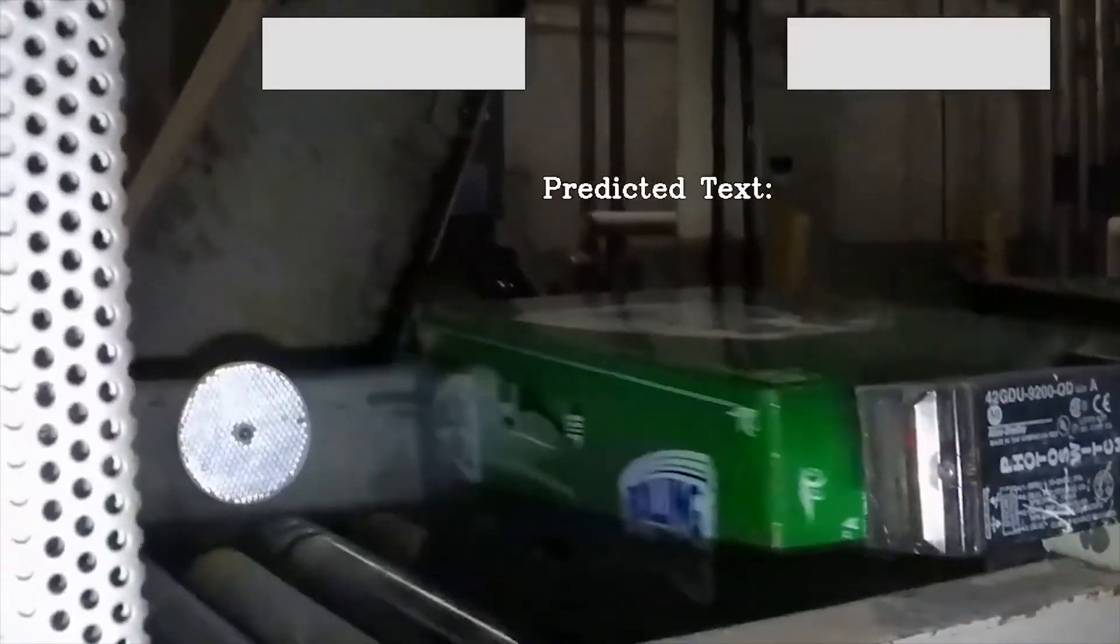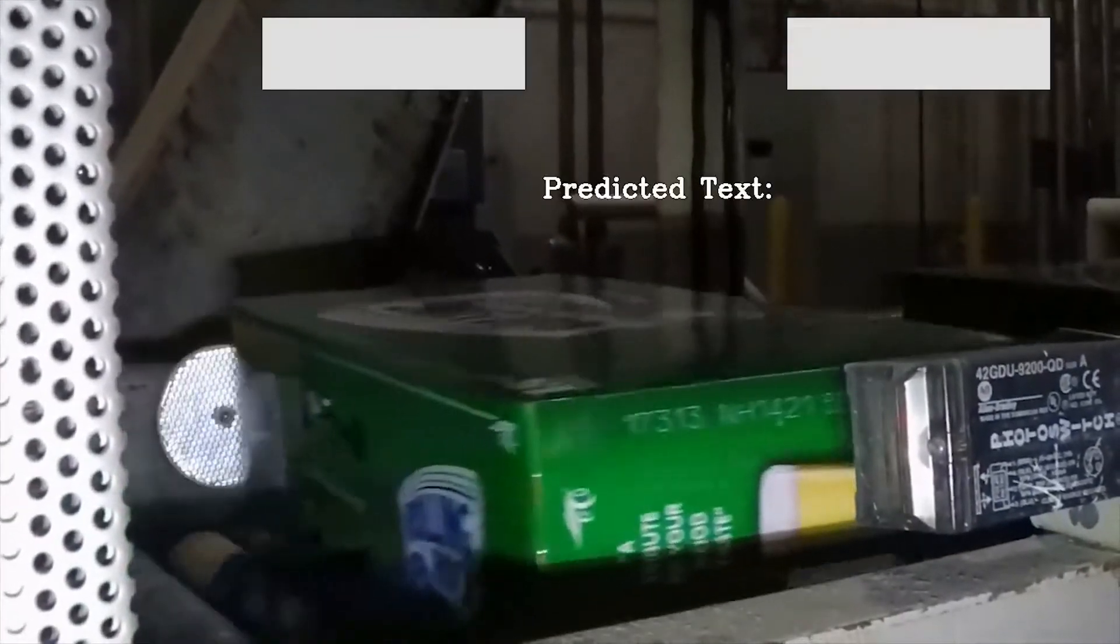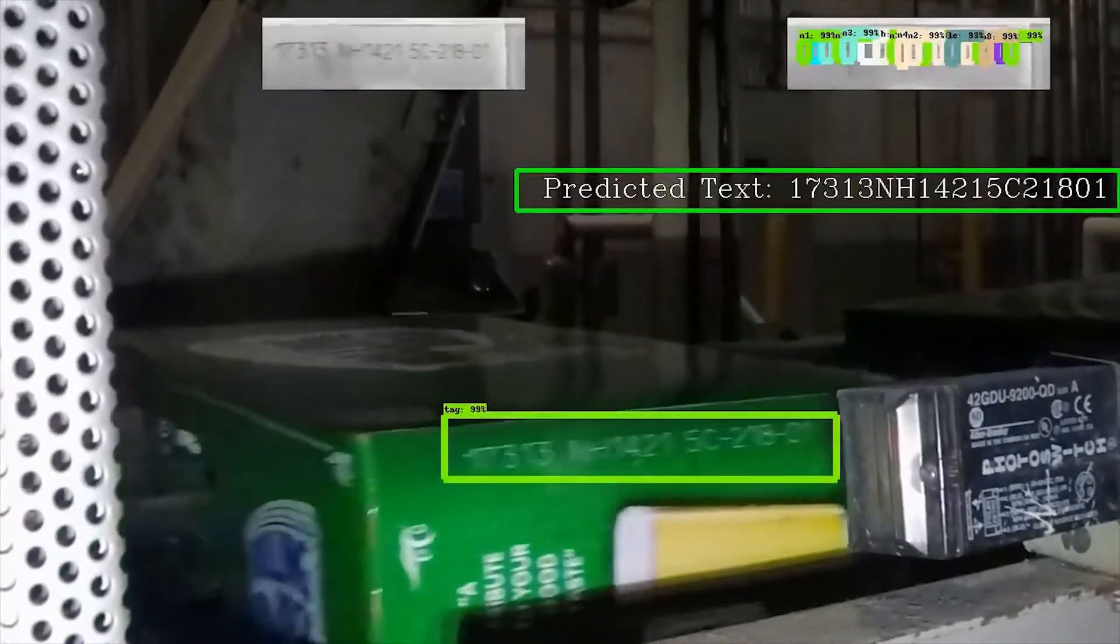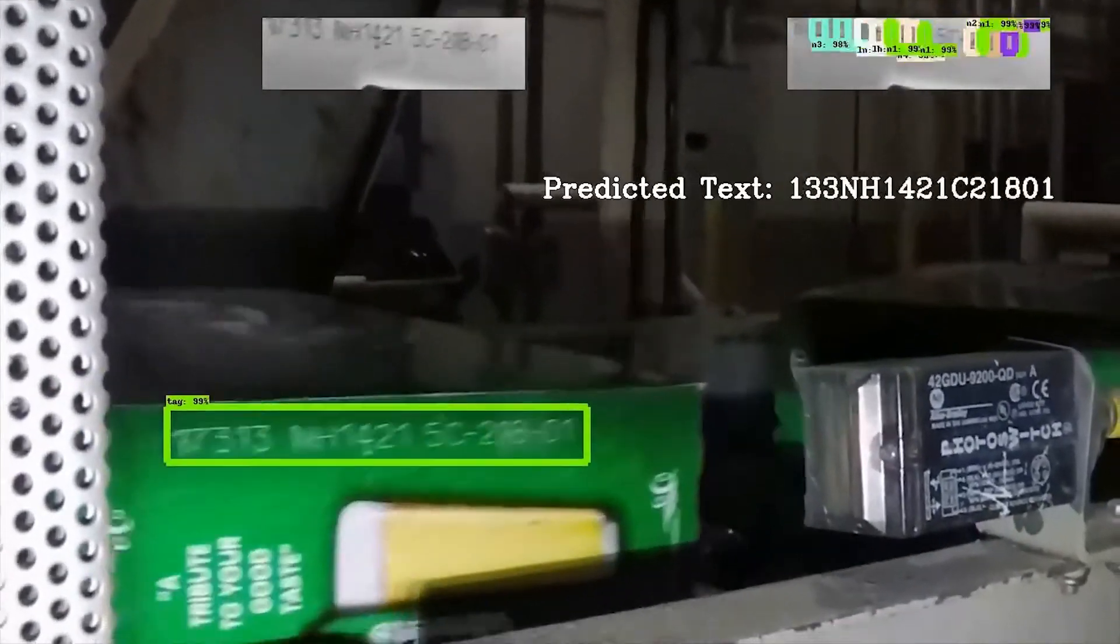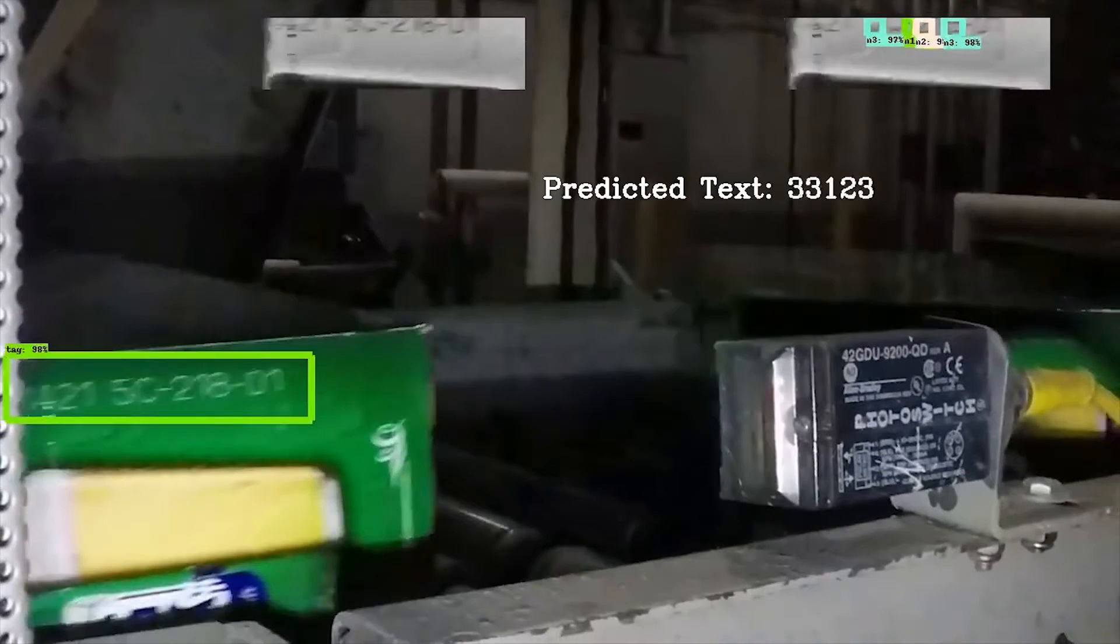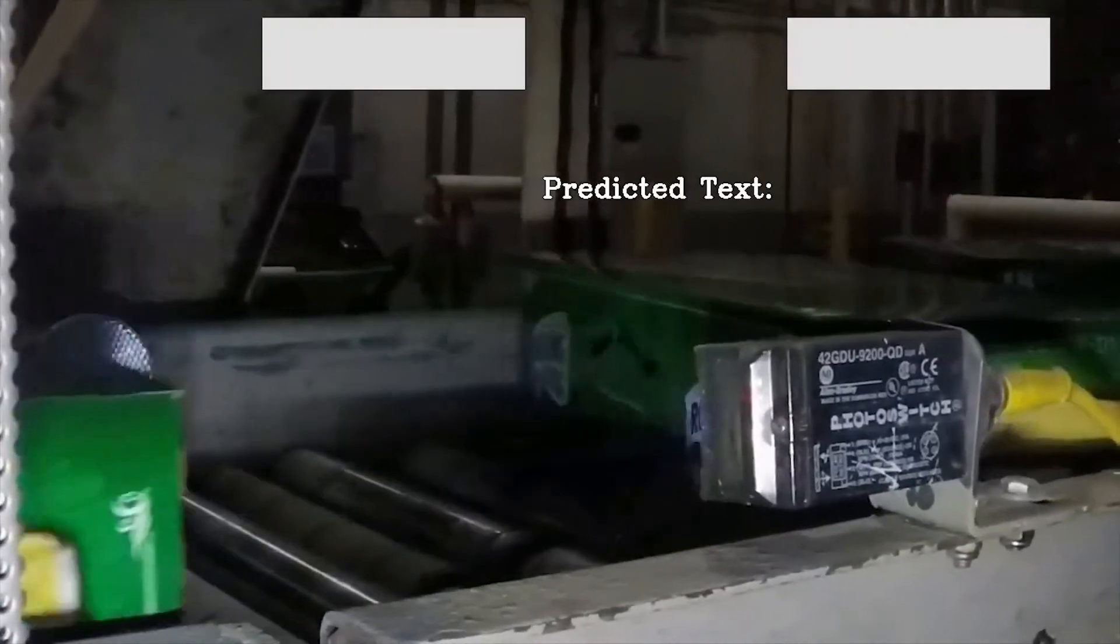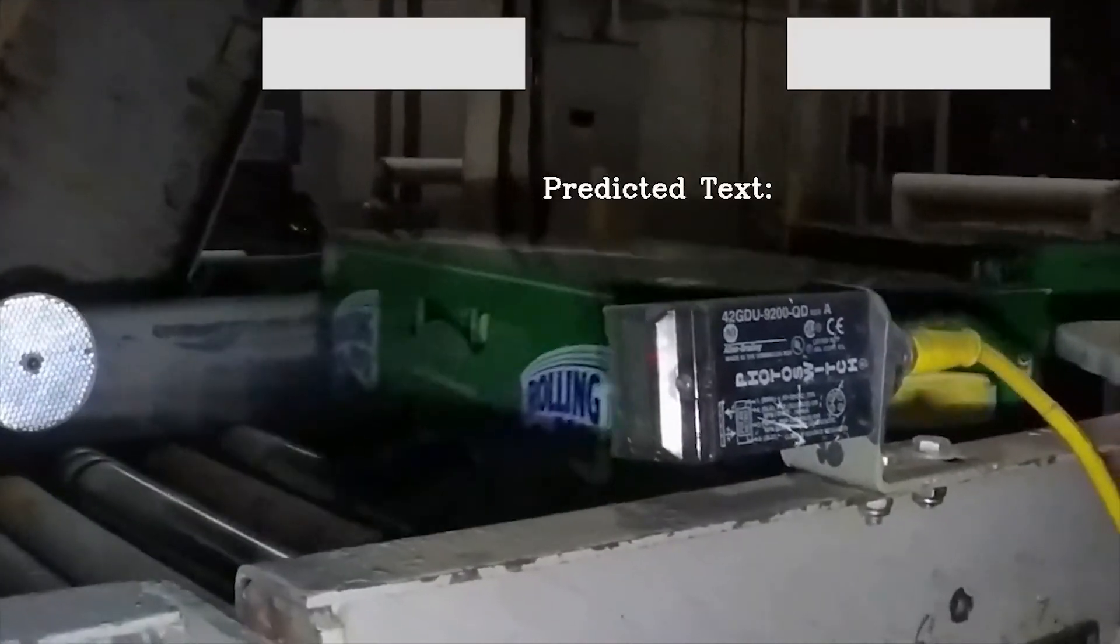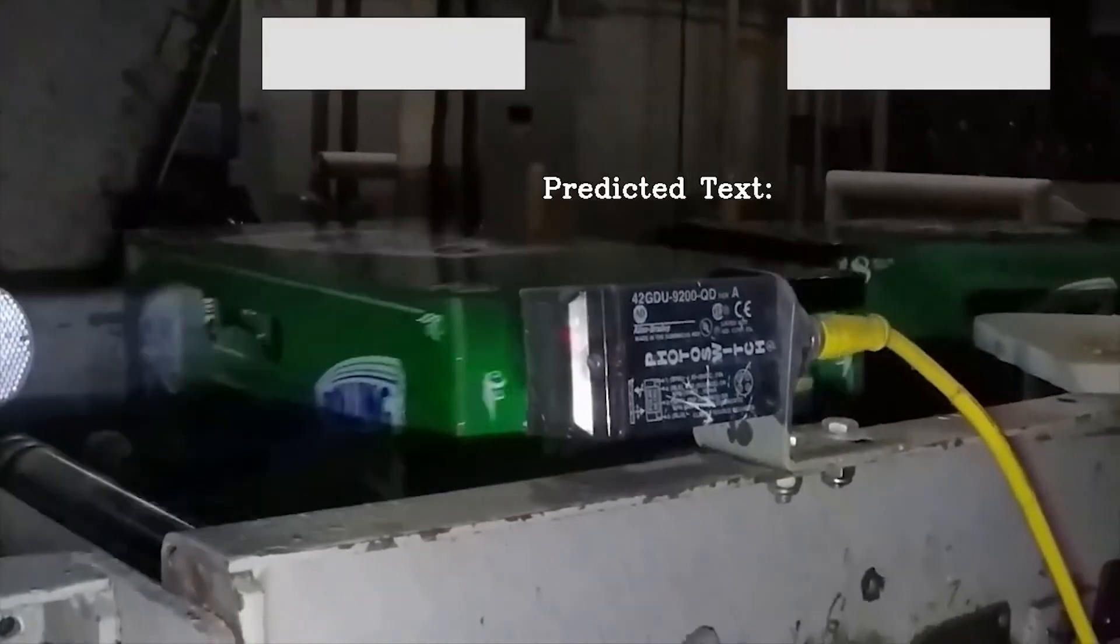SpringML's label detection app uses machine learning to identify anomalies in package labeling. This app uses live video or images of packages and extracts text in real time. If the text does not conform to standards, then it raises alerts in real time.